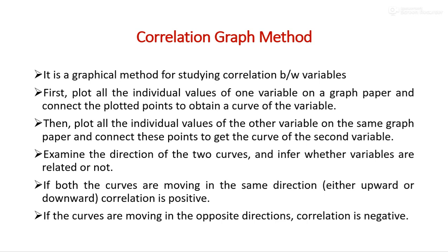Now, examine the direction of the two curves and infer whether the variables are related or not. If both curves are moving in the same direction, then there is positive correlation between the variables. In other words, if both curves show an upward movement or both show a downward movement, then the variables are positively related.